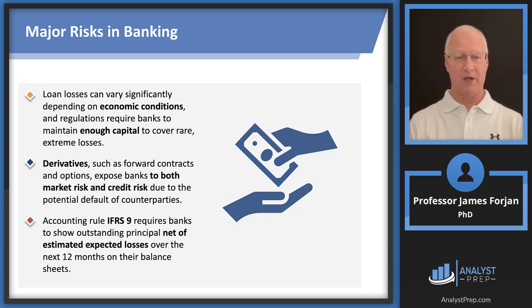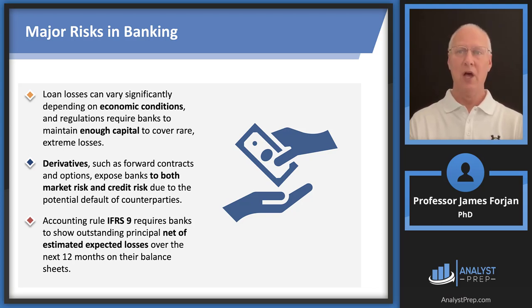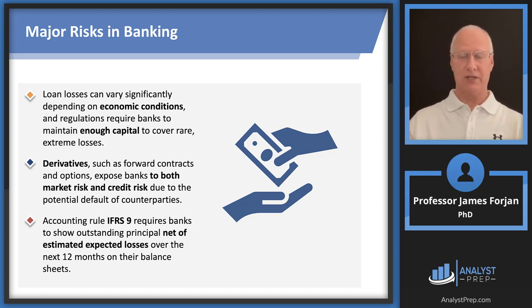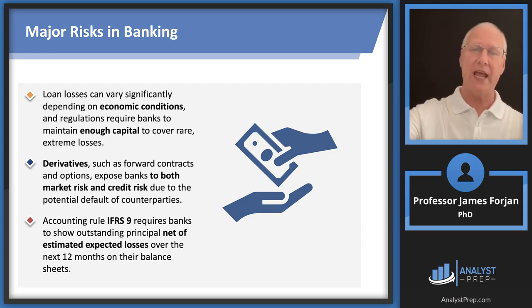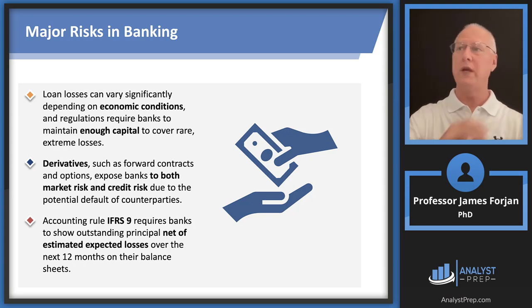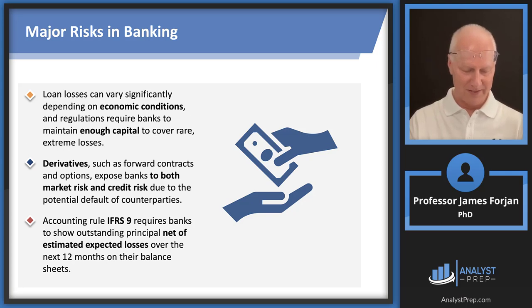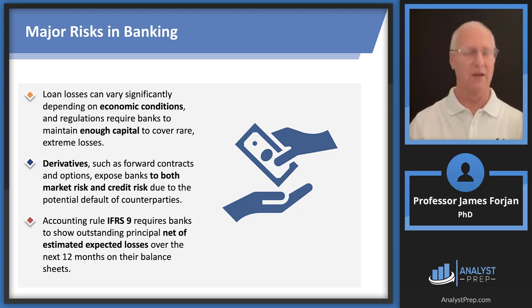Speaking of governing bodies, the International Financial Reporting Standards Board requires banks to show outstanding principles based on estimated expected losses over some time period. IFRS 9 tells us we need to go 12 months. But as good risk managers, we ought not to say we don't care what happens in 367 days — we need to worry about not just 367 days but 1,367 and even 10,367 days, which works out to about 28 years. Either way, our horizon should extend well beyond the minimum regulatory window.